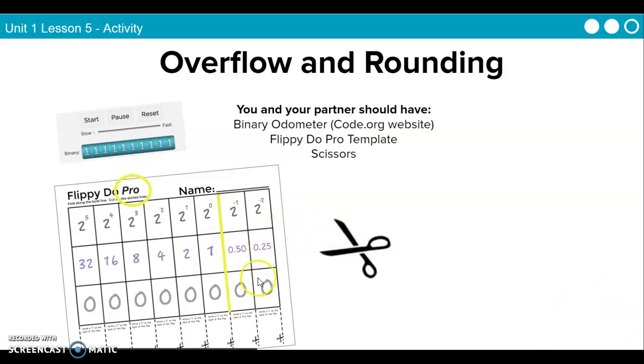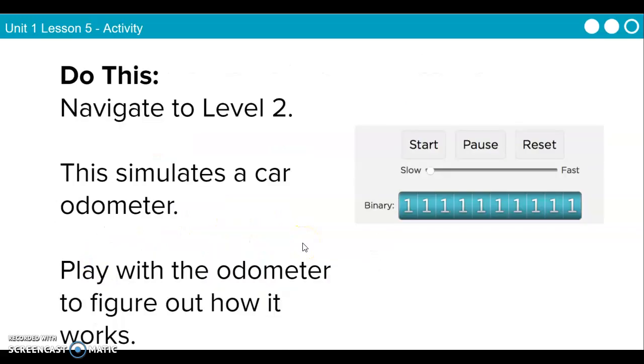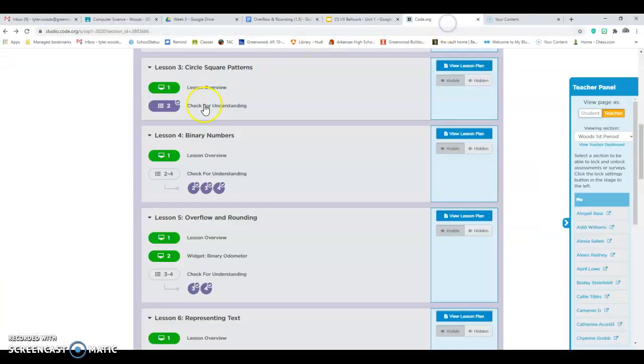And you'd put the same 0s and 1s just like we did on the last one. And remember, 8 bits make up 1 byte. So our Flippy-Doo Pro is only just 1 byte because it's 8 bits. Once you guys make that, we are going to navigate to the odometer on our code.org.